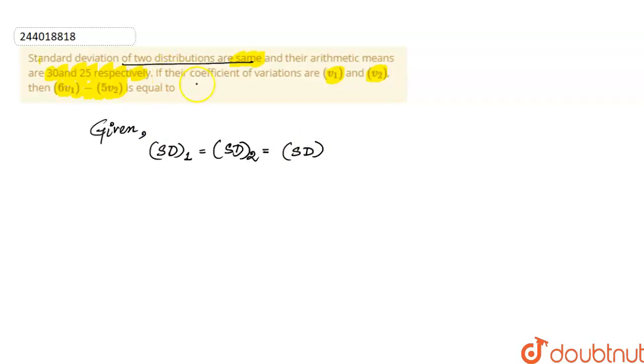If the coefficients of variation are v1 and v2, what is the coefficient of variation? The coefficient of variation is standard deviation divided by mean.